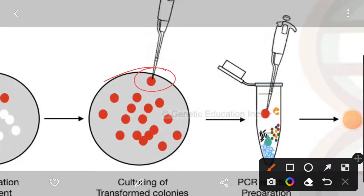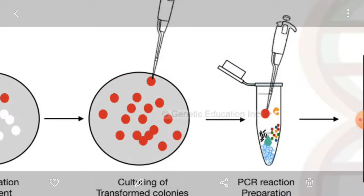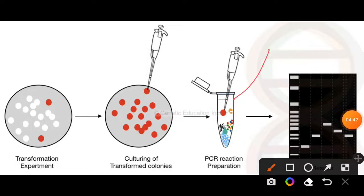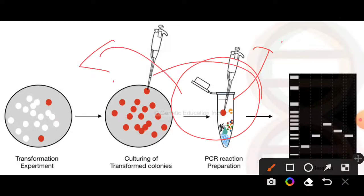The idea will be, you will pick up a particular colony, and then you will add it in a PCR tube. Then you can either lyse them in a small amount of water or you can directly add them in a thermocycler machine. The thermocycler machine is the PCR machine where we are conducting the PCR process.